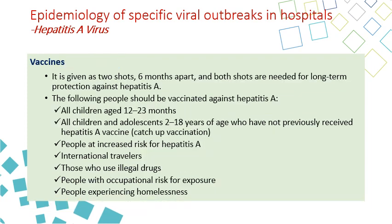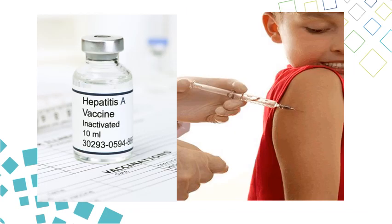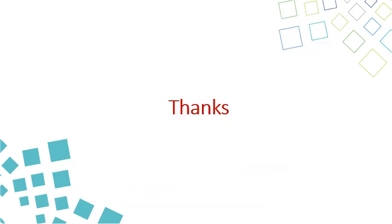The hepatitis A vaccine is given in two doses, six months apart, usually starting in the second year of life as part of childhood immunization. Those who did not receive it as children can still get it up to 18 years of age. It should be given to people at high risk, especially travelers, those who use illegal drugs, people with certain occupational exposures, and people experiencing homelessness due to exposure to street food. Thank you for listening to this lecture about different viral infections that can cause outbreaks in hospital settings.